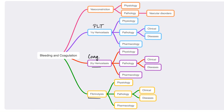Vasoconstriction physiology we have talked about before. Pathology — vascular disorders — is the topic of today's video. Primary hemostasis physiology is done. Pathology clinically is done: petechiae, purpura, ecchymosis, we have spoken about them. Diseases are not done yet. Pharmacology — we did aspirin, but we did not do the other drugs such as clopidogrel, prasugrel, abciximab, tirofiban, eptifibatide, etc.